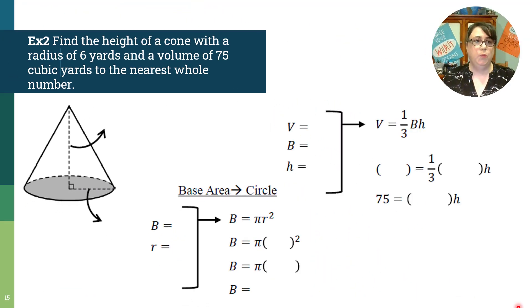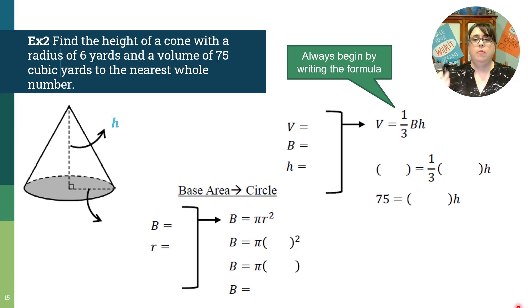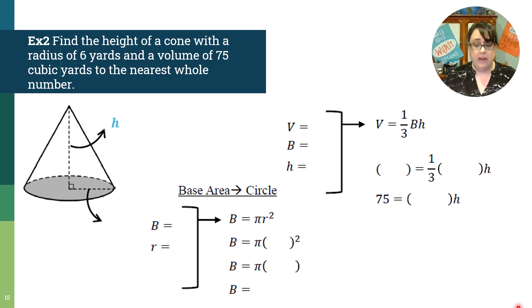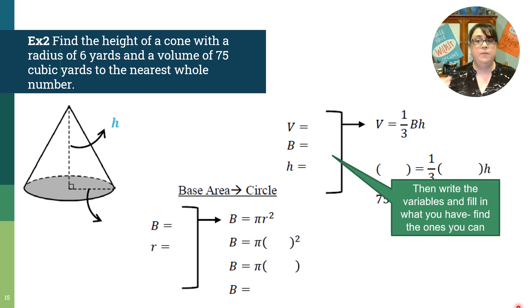Example two, find the height of a cone with a radius of six yards and a volume of 75 cubic yards to the nearest whole number. So when I look at this problem, I'm already feeling a little like, this isn't normal. This was find the height, not find the volume. And this is exactly why we begin by writing the formula. When we write the formula, that frees up our brain for that problem solving. So I write volume equals one third base area times height. Remember to use the capital B, not the lowercase b. Capital B means base area. Lowercase b means like base, like the length on a rectangle or something like that. So now that I've done that, I write out my variables and then we find the ones that we have.